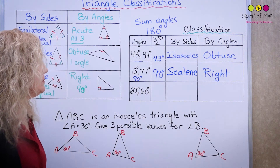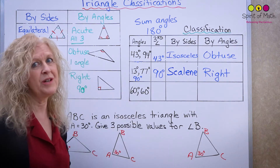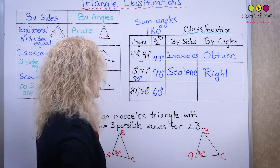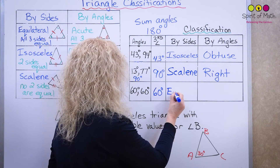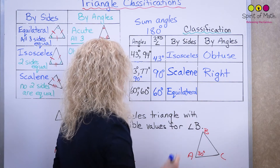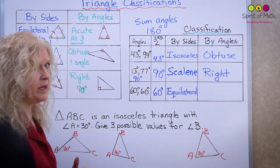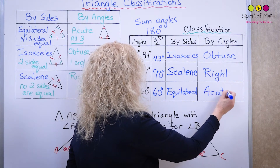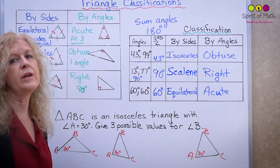The last example starts with one given angle of 60 degrees. 60 plus 60 is 120, and 120 plus another 60 gives 180 — so all three angles are 60 degrees and equal. That means all the sides would be equal, giving us an equilateral triangle. Since all three angles are acute, this is an acute equilateral triangle.